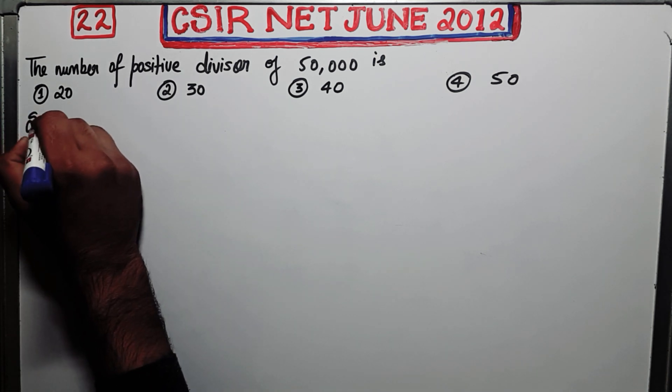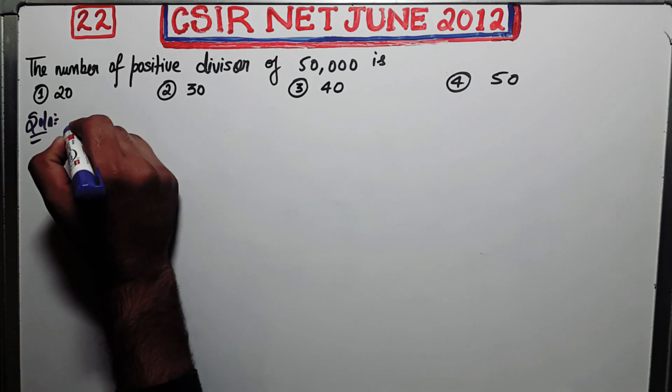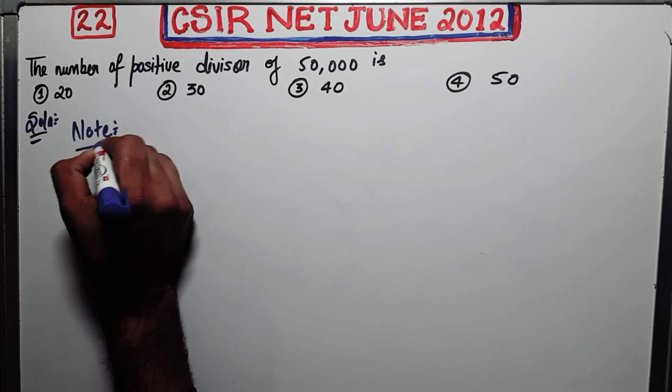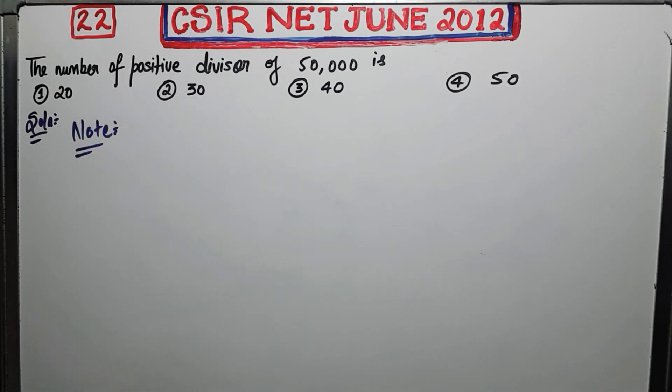Before doing that, I will provide a note to you. This is a very easy note. It can be formulated by using combinatorics. You can remember it as a note or either you can understand what it is.